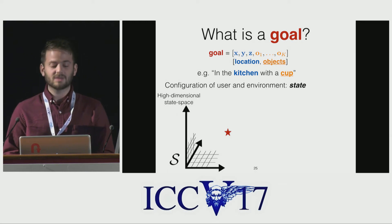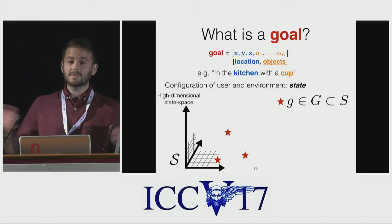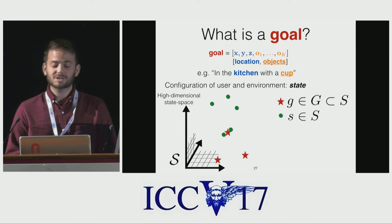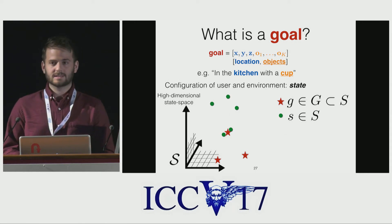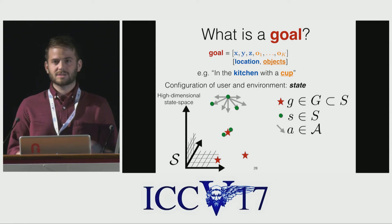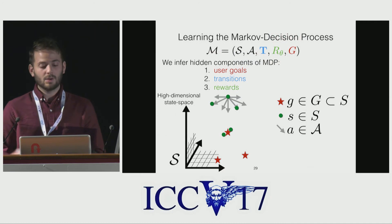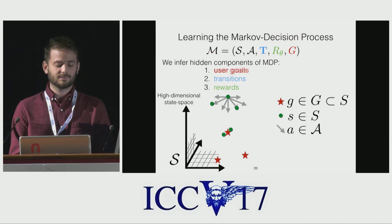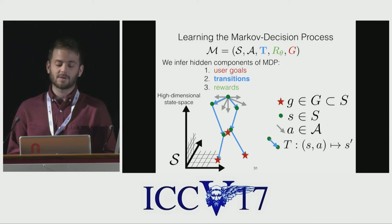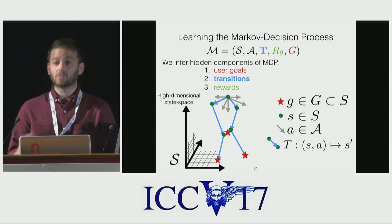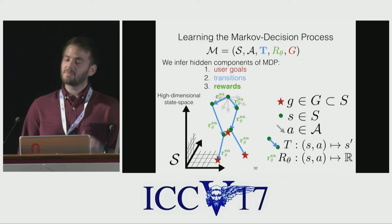A goal is a state in a high-dimensional state space of all possible configurations. There could be many goals in the environment, forming a subset of all possible states. A person is always in a single state at any point in time; some states are not goals, so a person generally wants to move from non-goal states to goal states by taking actions such as changing physical locations or picking up or putting down an object. Rewards encode a person's preferences — they may prefer one route, one object, or one goal to another.